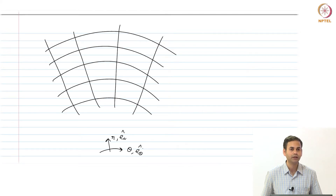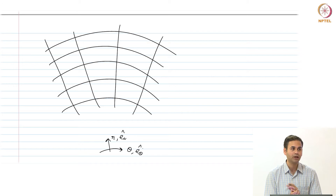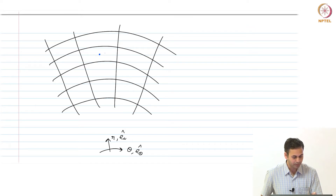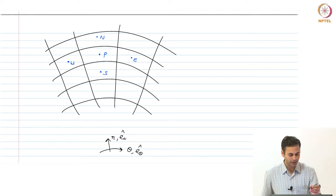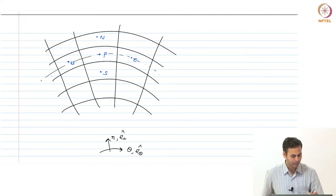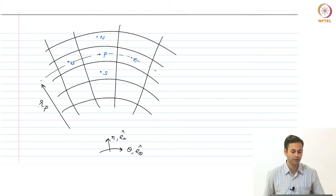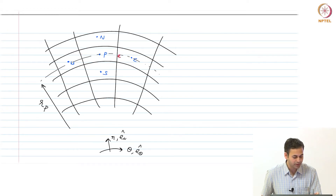Let us say we want to solve for diffusion in a circular geometry, or if you have an annular region. This is an orthonormal system. Let us introduce the cell centroids: this is the P cell, this is the east cell, this is west, this is north, and this is south. The radius for the P cell is r_P, which is also the same as r for capital E and r for capital W. We also have names for the faces: east face, west face, north face, and south face.